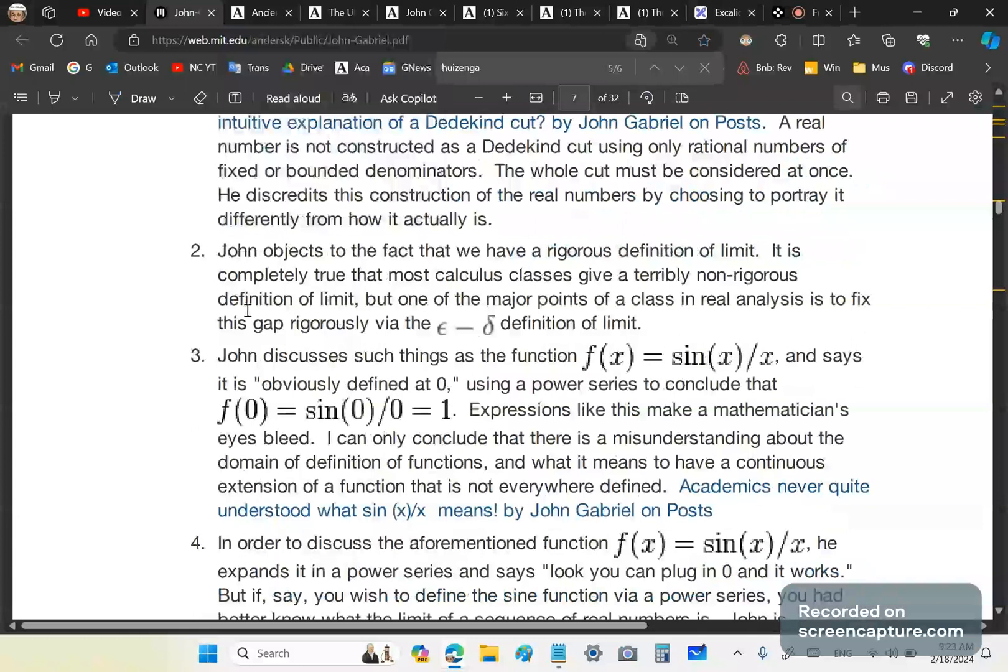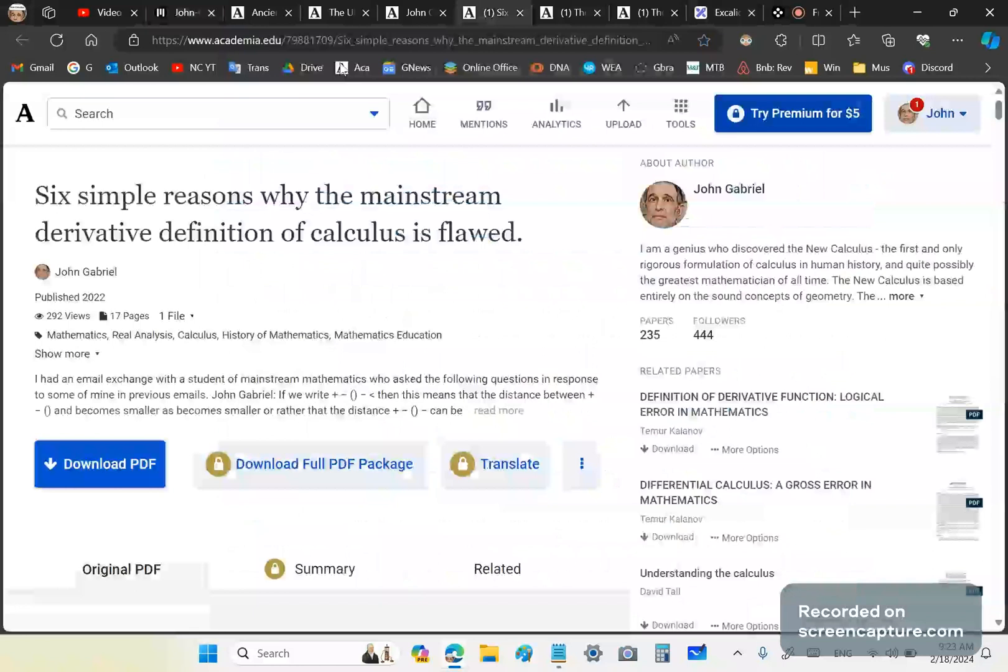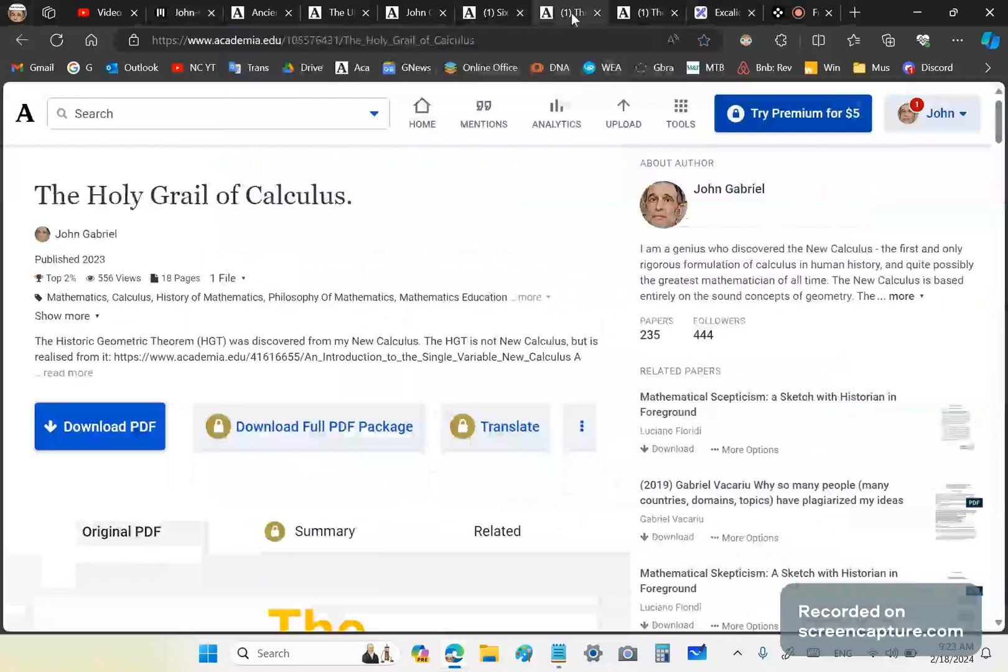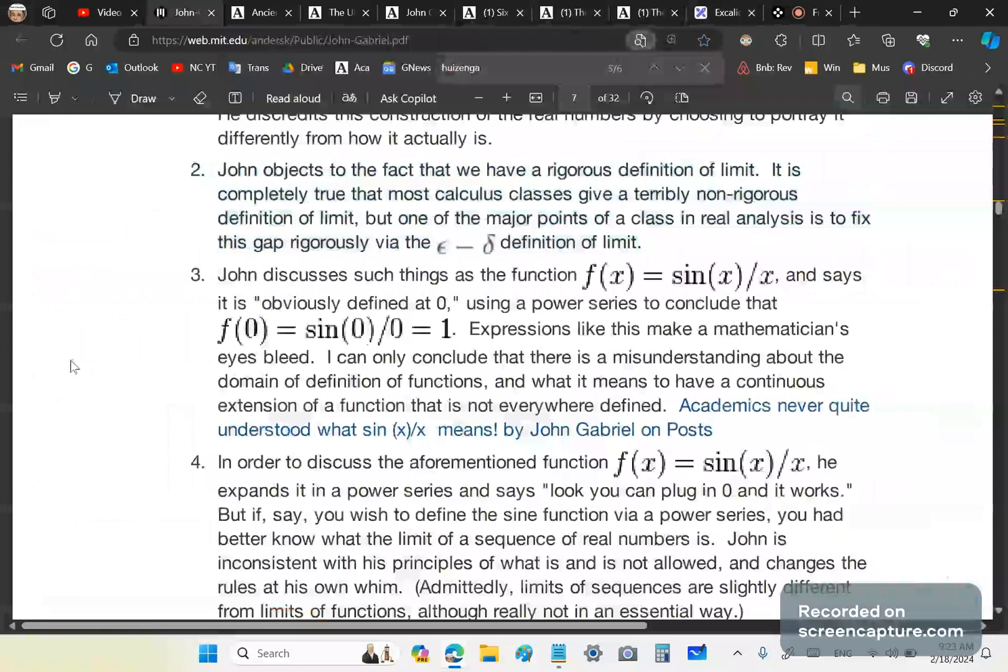Then he says, John objects to the fact that we have rigorous definition of limit. This I've proved is false so many times over. Here's an article with six simple reasons why it's wrong. And then I've also written the nonfiction origins in history of calculus and the holy grail of calculus. All of these things show that what he's saying here in objection to is blatantly false. It actually makes me angry when I read these accusations.